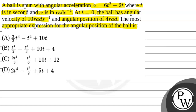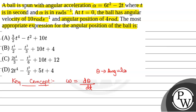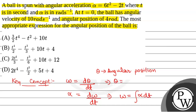So we'll solve this question. First of all, we'll see what the key concept used in this question will be. The key concept is omega, that is angular velocity, equal to d-theta by dt, where theta is the angular position. Alpha, that is angular acceleration, is d-omega by dt. From here, omega equals the integration of alpha dt, and angular position theta equals the integration of omega dt.